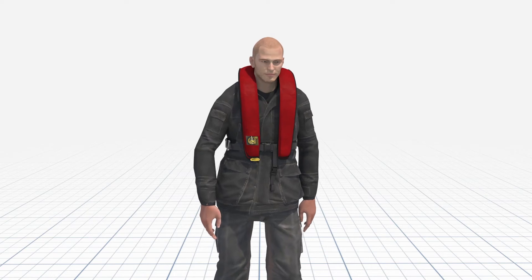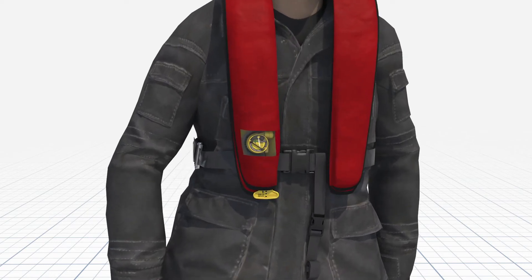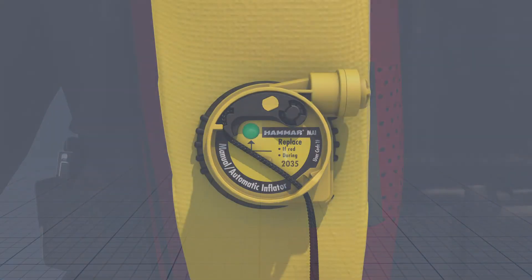When attached to a life jacket bladder, the gas cylinder inside the bladder is permanently attached to the MA1.